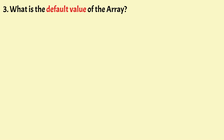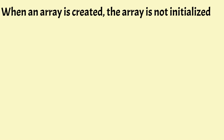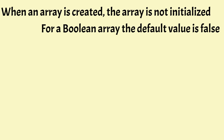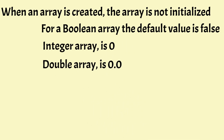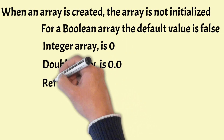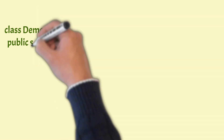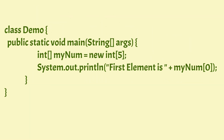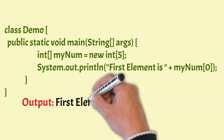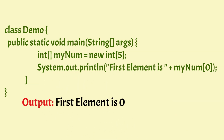What is the default value of an array? When an array is created but not initialized, the compiler assigns default values, which differ by type. For a boolean array, the default value is false; for an integer array, it is 0; for a double array, it is 0.0; and for reference types, it is null. In a Java program where an integer array is created but not initialized, printing the first element outputs 0, which is the default value.